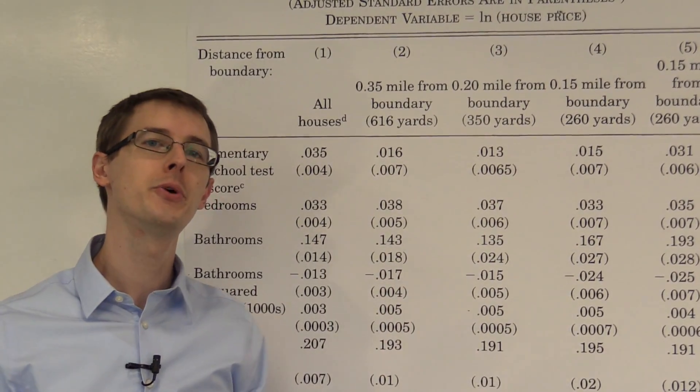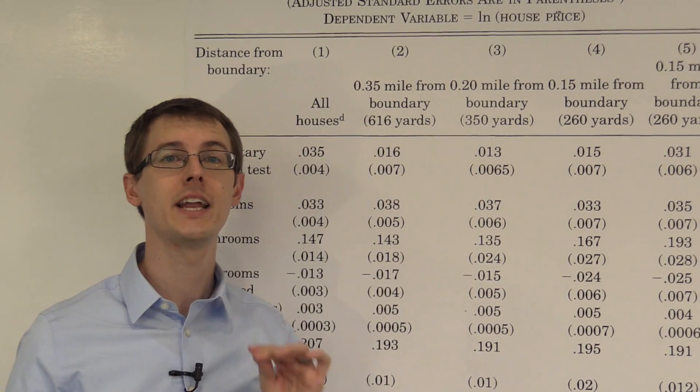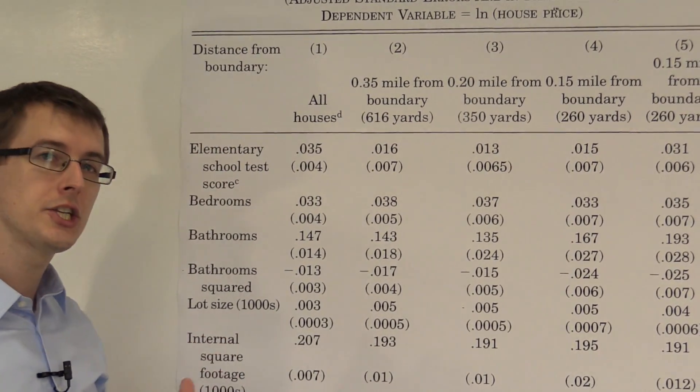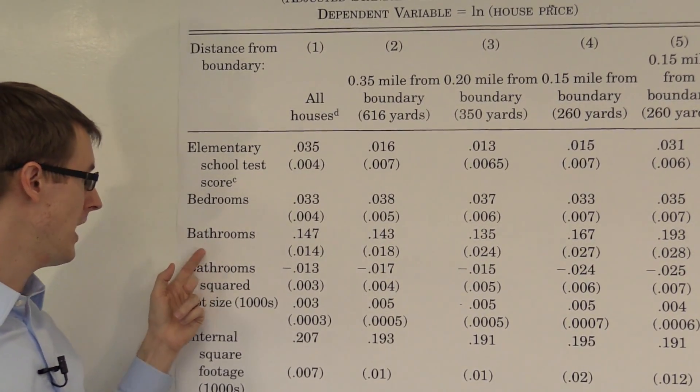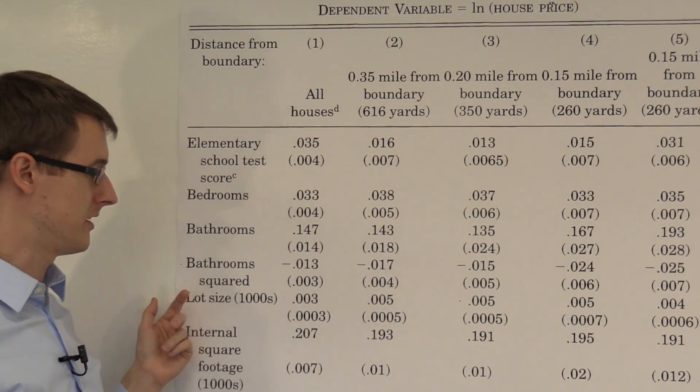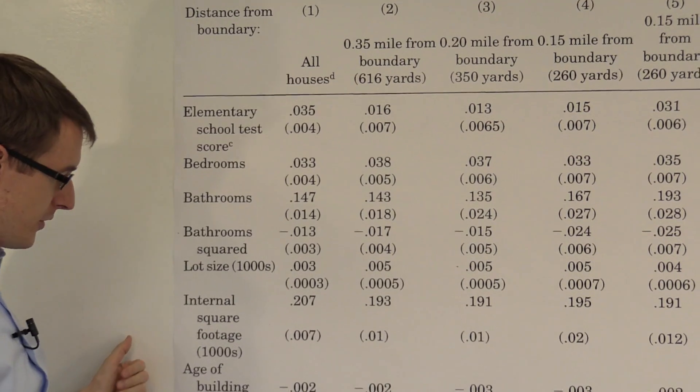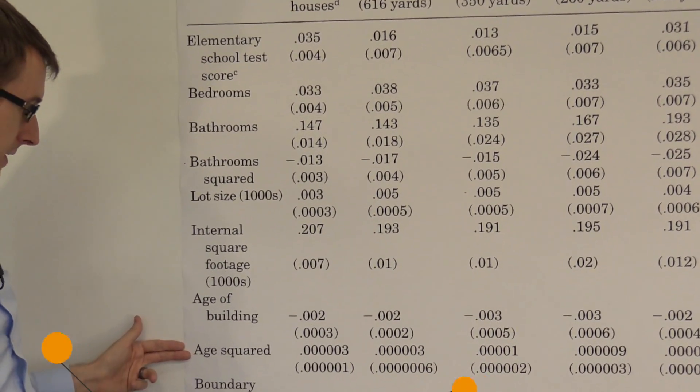Now remember, our units of analysis here are different houses. So each house has some other variables associated with it, like the number of bedrooms, the number of bathrooms, the number of bathroom squares, the lot size, internal square footage, age of building, age squared.